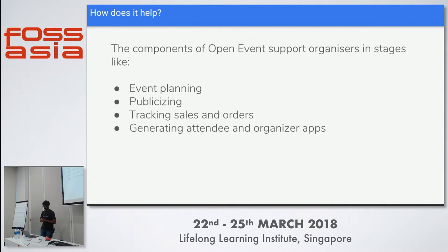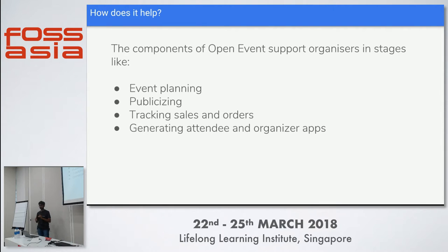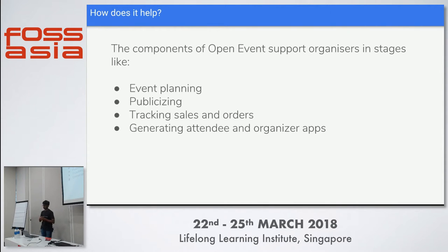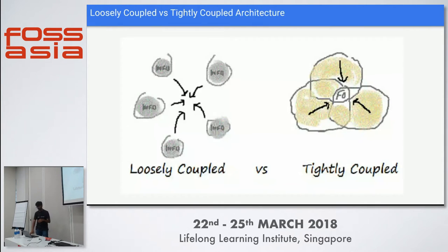Open Event works through many components that help you in event planning and publicizing your event — making it live on the web and building your online presence. Open Event helps with that through its Android App Generator and Web App Generator, and it also helps in tracking sales, orders, and more.